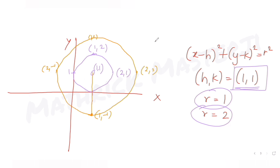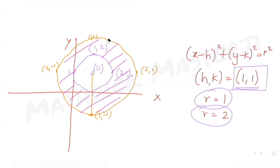Now with both circles drawn, the common region lies between the two concentric circles — that annular region is your set A. So set A is the region between the two circles centered at (1, 1) with radii 1 and 2.